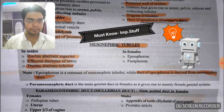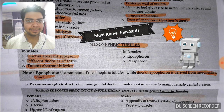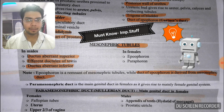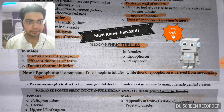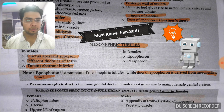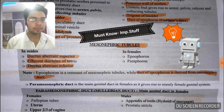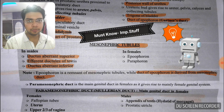The mesonephric tubules form, in males: ductus aberrans superior, efferent ductules of testis, and ductus aberrans inferior. In females, they form the epoophoron and paroophoron. Remember: mesonephric tubules form the epoophoron, while the mesonephric duct forms the duct of epoophoron — do not confuse these two.